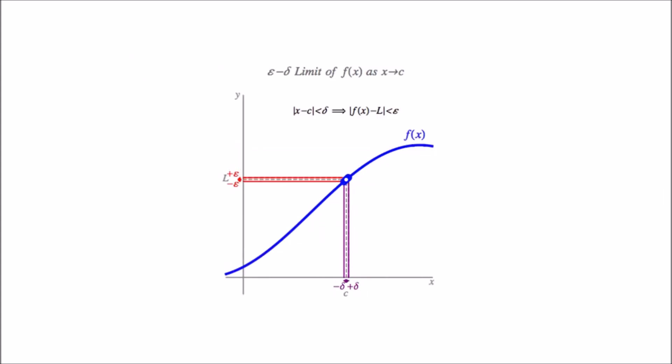Here's a video showing a graphical interpretation of the definition. The purple lines represent the delta inequality, and the red lines represent the epsilon inequality. Essentially, for the limit to exist for any width for the red lines, there has to exist some purple line width that's non-zero.